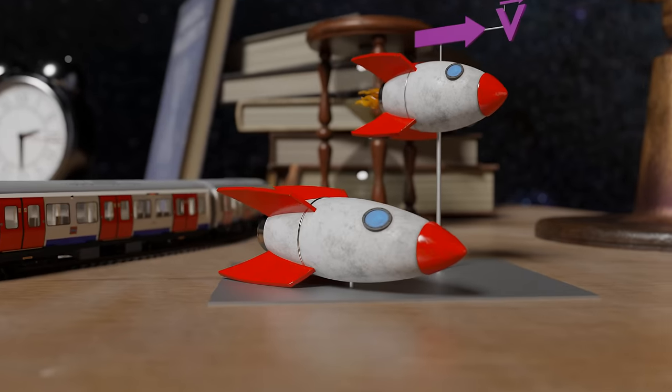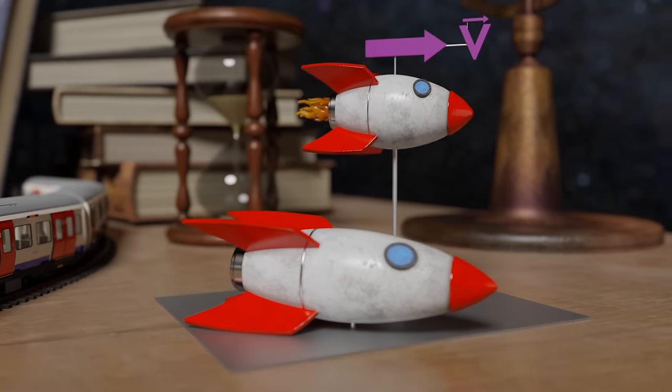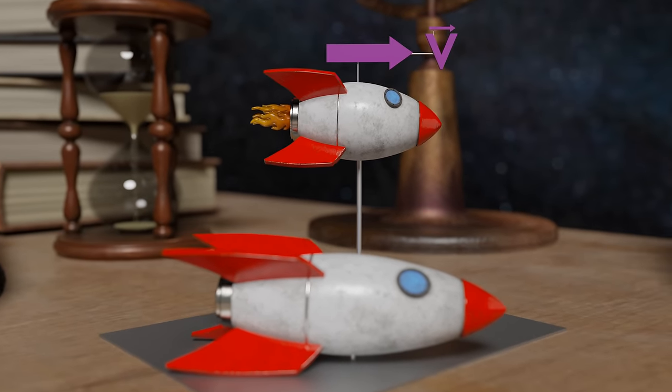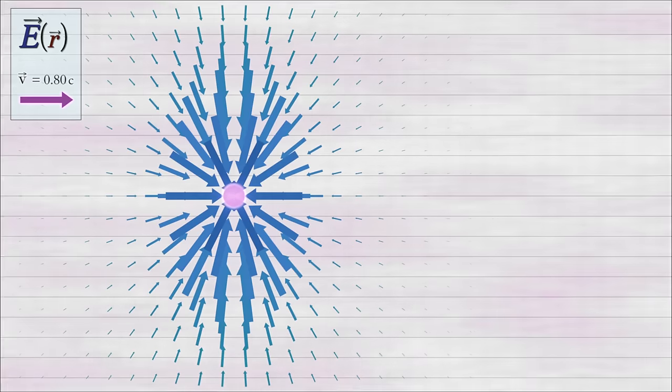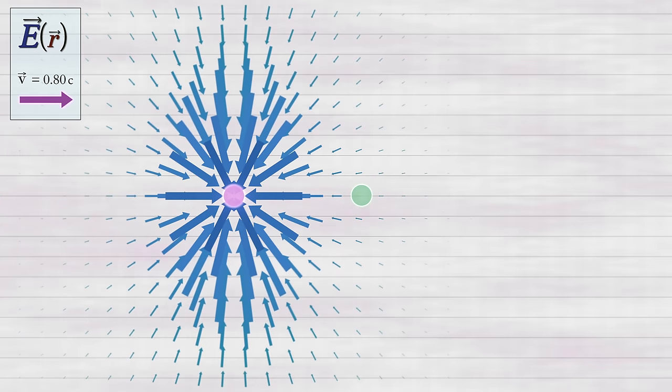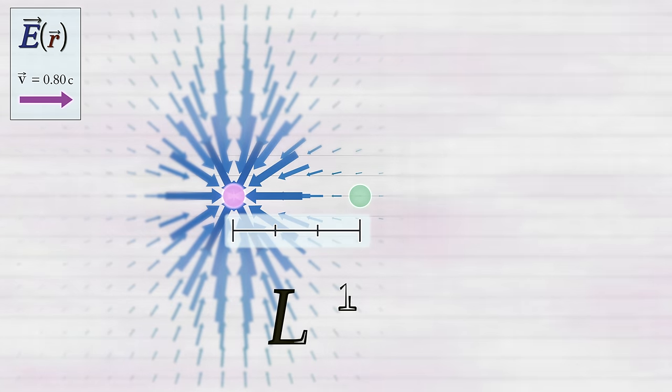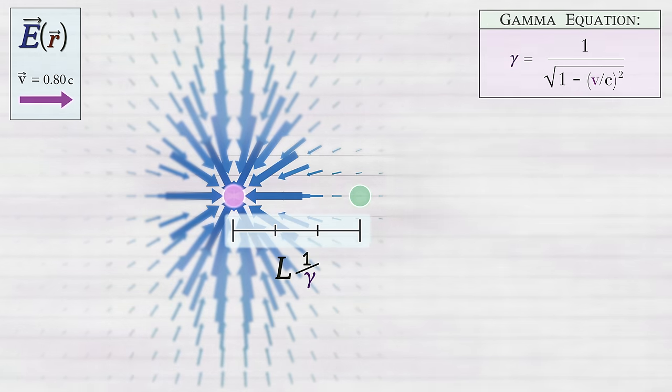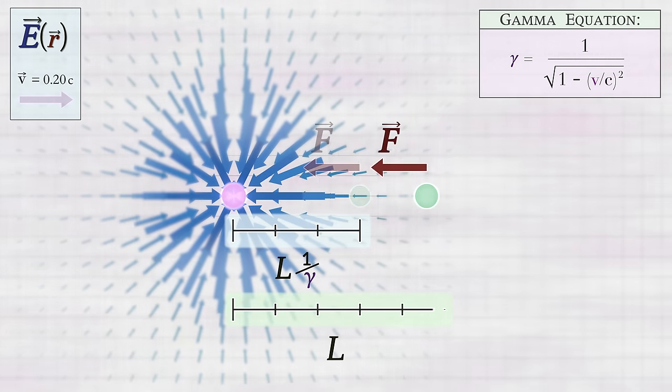To see why, simply place a charge in the moving field at a contracted distance of L times 1 over gamma out from the source along the line of motion, and calculate the force it would feel there. Turns out, that force is the exact same as the force it would feel at a distance L out from a charge at rest.